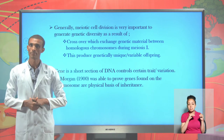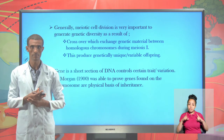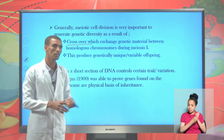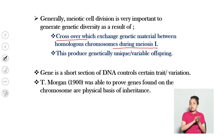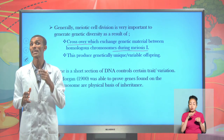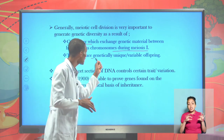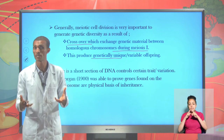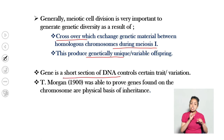Generally, meiotic cell division is very important to generate genetic diversity in living organisms. This is a result of crossover, which is important for exchanging genetic segments between homologous pairs during prophase I of meiosis I. As a result of crossover, none of the daughter cells formed at the end of telophase II are identical, which is very important in the creation of unique and variable offspring across generations. The short section of DNA that determines an organism's genetic variability is what we call a gene, which is very important in determining an organism's traits and variation.